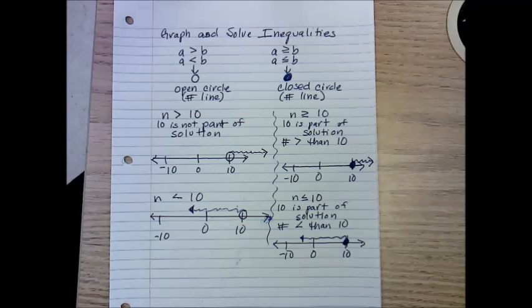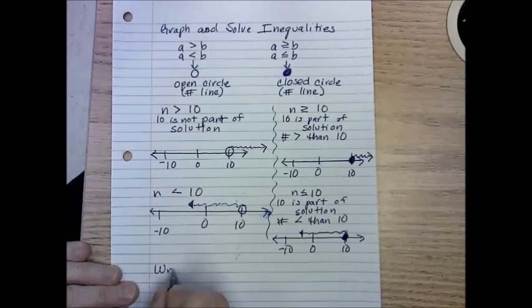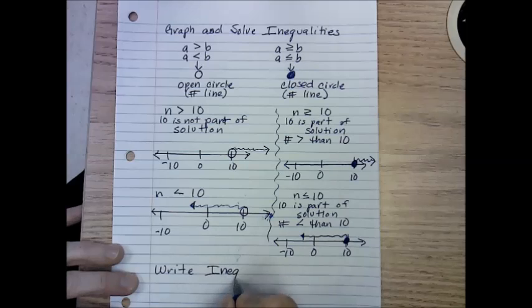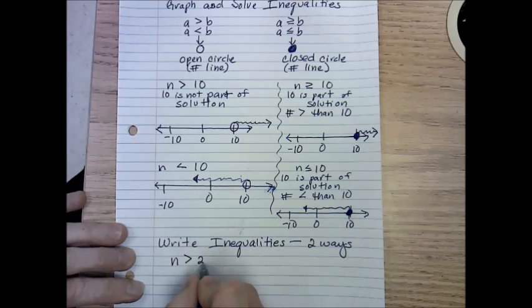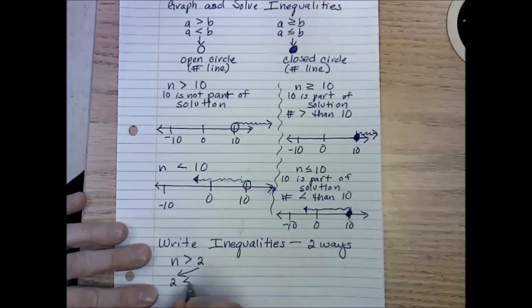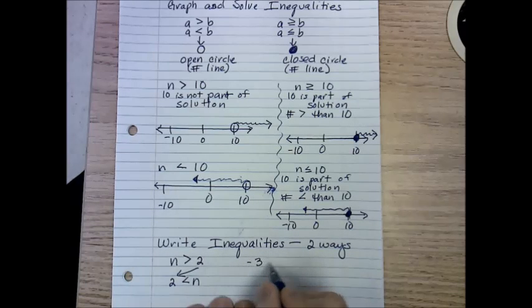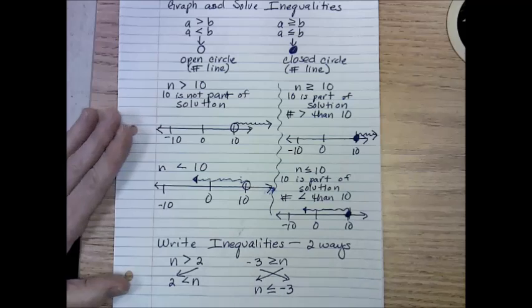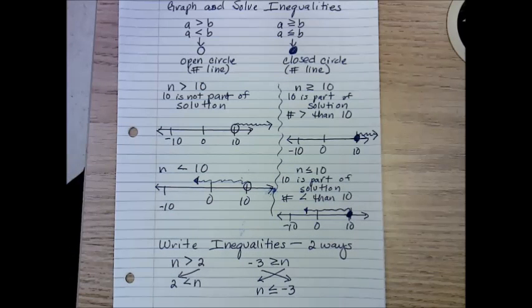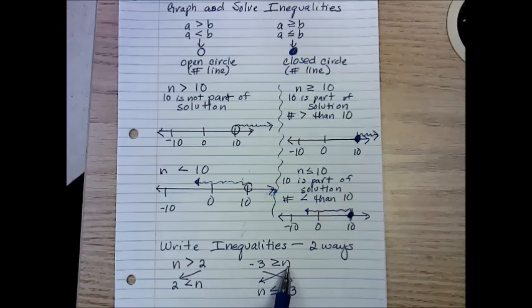Now let's talk about how to write our inequalities. There are always two ways, so we want to get good at doing this both ways. If we have N is greater than 2, that is the same as 2 is less than N. If we have negative 3 is greater than or equal to N, that would be the same as N is less than or equal to negative 3. If you're putting the terms in different order, you also have to flip the sign and keep it next to the same term. Here the point is next to the 2, so the point has to stay next to the 2. Here the point is next to the N, so the point still has to stay next to the N.